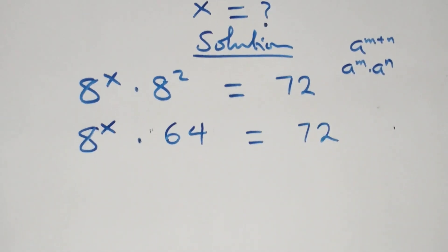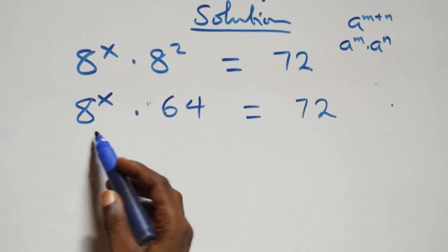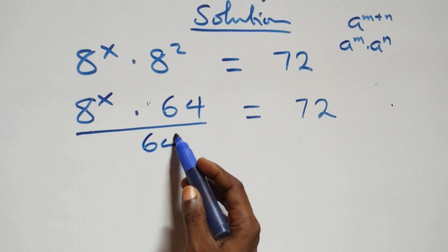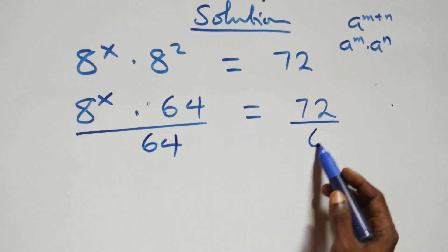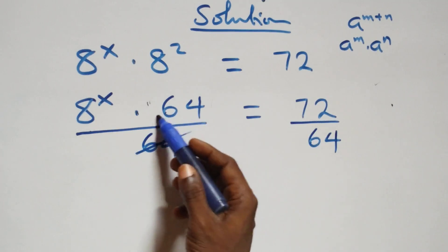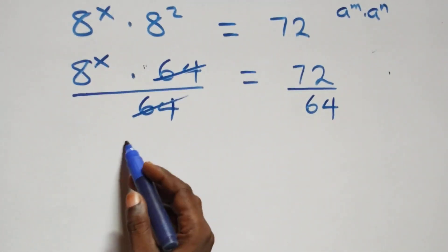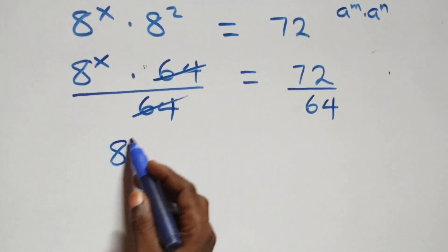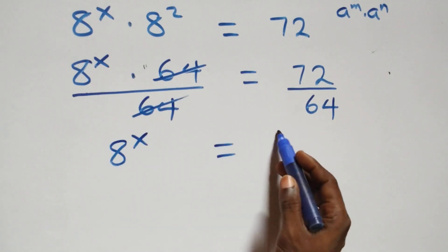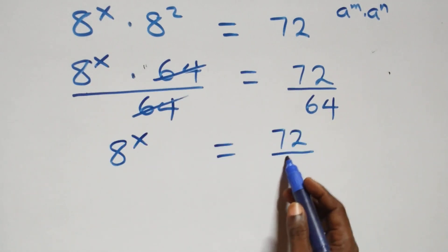Next step, we divide both sides by 64. We divide this side by 64 and also divide this side by 64, which implies 64 cancels here and we are left with 8 raised to power x, which is equal to 72 over 64.